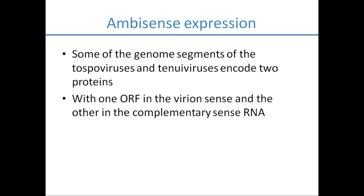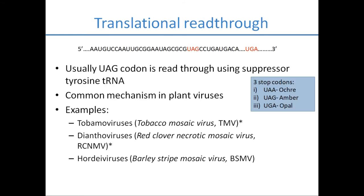Ambisense expression: some genome segments of tospoviruses and tenuiviruses encode two proteins — one ORF in the virion sense and the other in the complementary sense RNA. From the same sequence we get two proteins, so ambisense expression increases the number of genes that can be encoded.